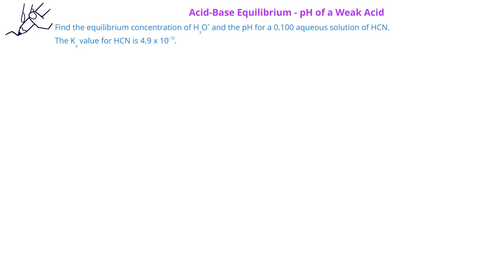In this problem, we're asked to find the equilibrium concentration for the hydronium ion and the pH for a 0.100 molar HCN solution. We're given that the acid ionization constant value for HCN is 4.9 times 10 to the minus 10.